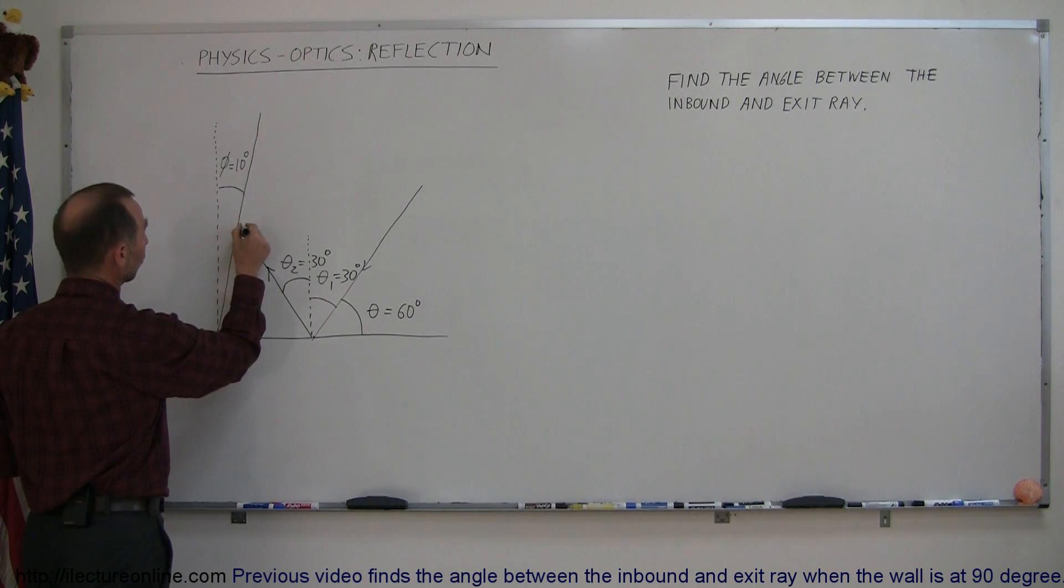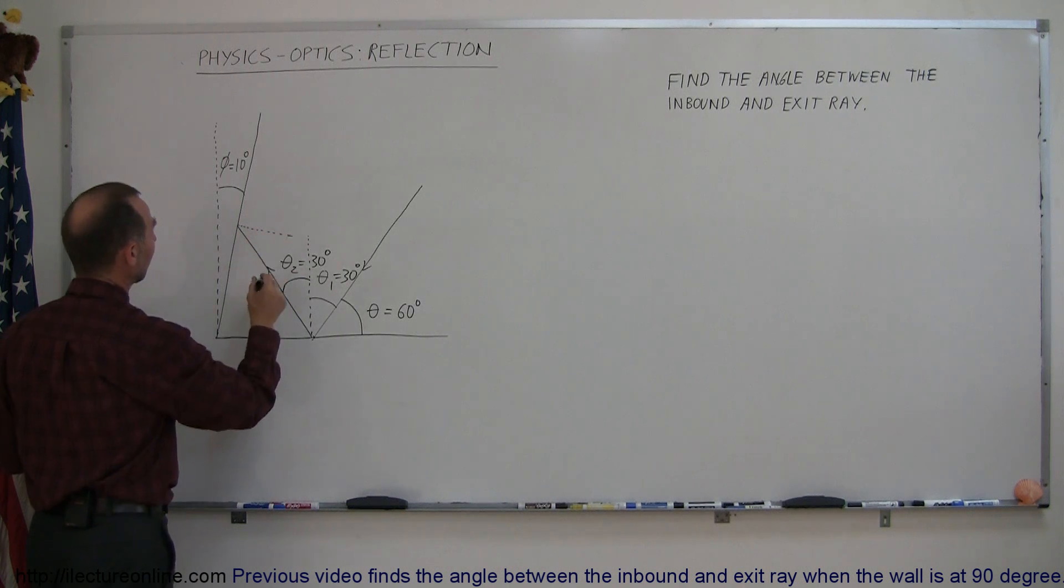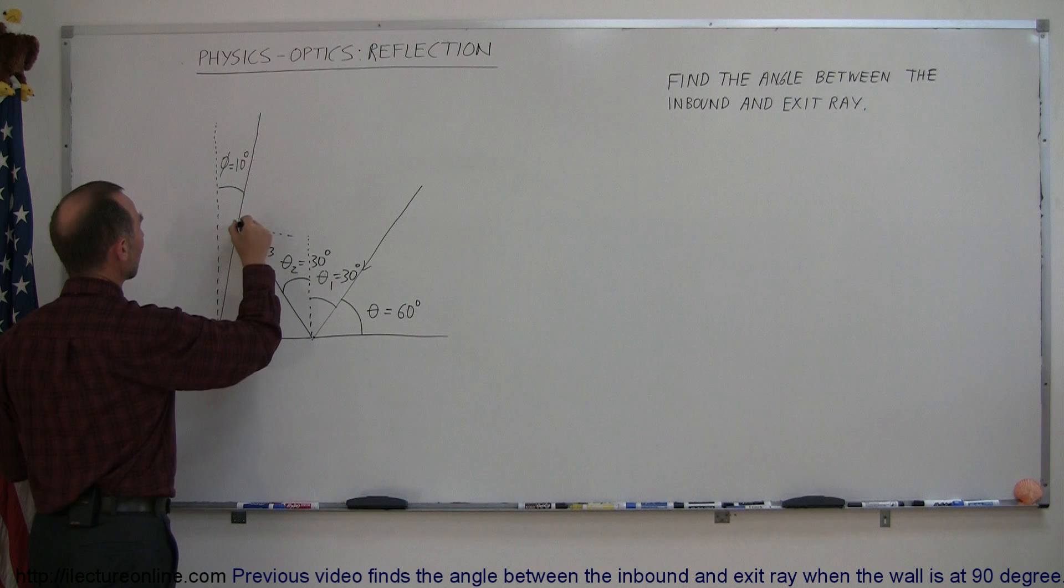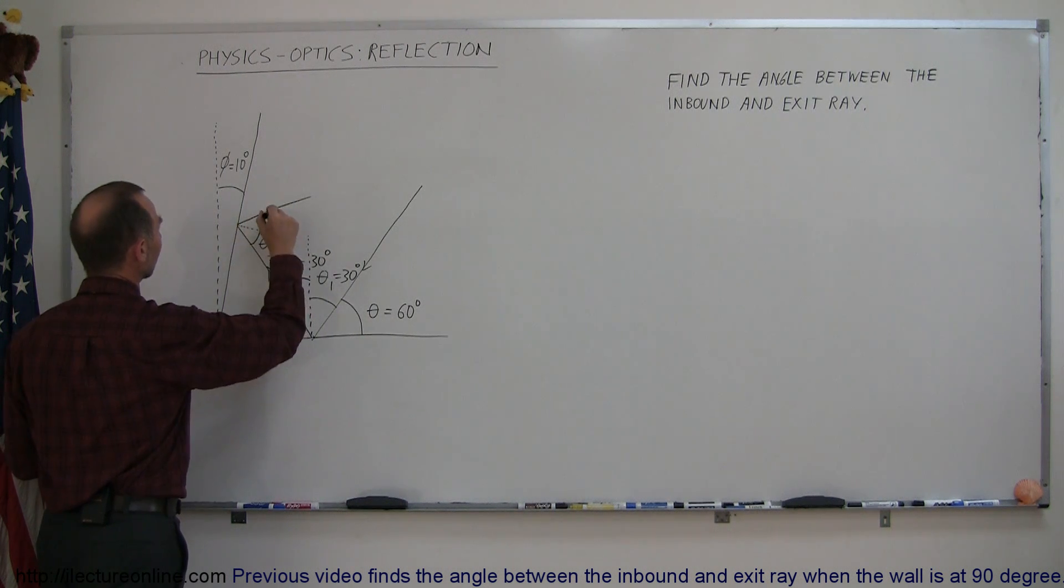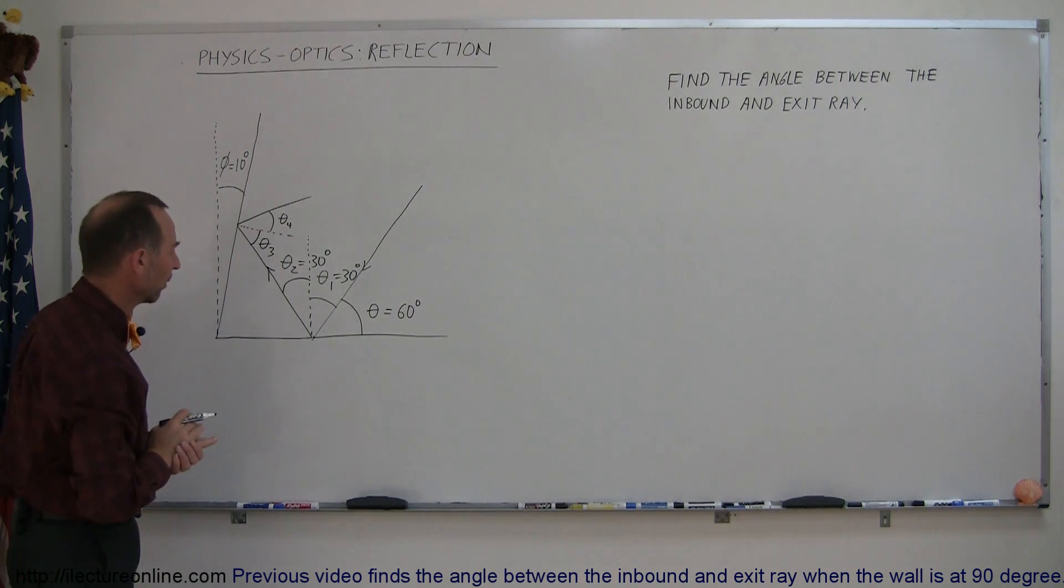Again draw a normal to the surface like so and this then becomes the angle of incidence, let's call it theta sub 3, and then we have an angle of reflection, let's call this theta sub 4. Now how big are theta sub 3 and theta sub 4?